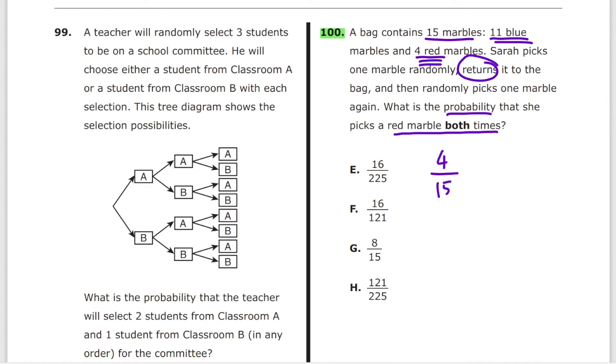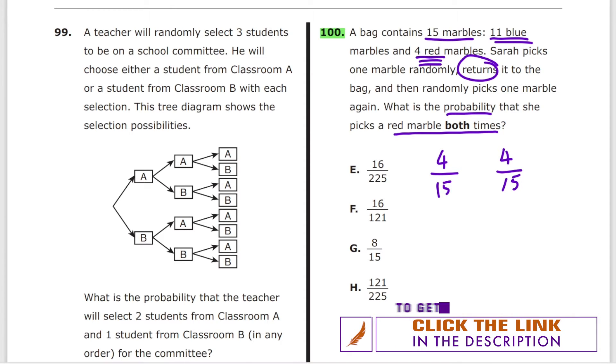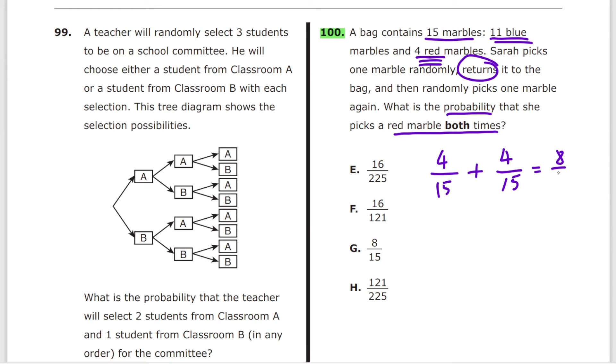Since she returns it back to the bag, the second time the probability that she'll select the red marble is again 4 divided by 15. Some of you will add it and you get 8 out of 15, which is G, and that's a wrong answer. Because you do not add probabilities, you multiply them. So it's 4 out of 15 multiplied by 4 out of 15, which is 16 over 225, and the answer is E.